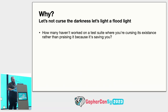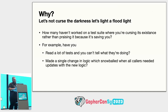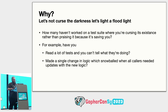I'm sure a fair amount of you have been there too. Have you ever been in a situation where you've read a lot of tests and you can't really tell what's going on? Have you made a single change in logic and it snowballed, requiring you to update all the places where this logic was touched? Or did you have to tweak a mock so it returned exactly some value because the business logic needed to change and now all the tests go through? All of these are kind of painful.